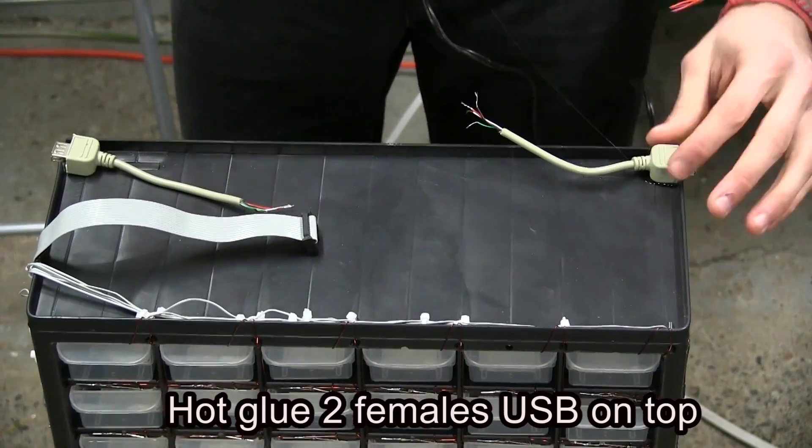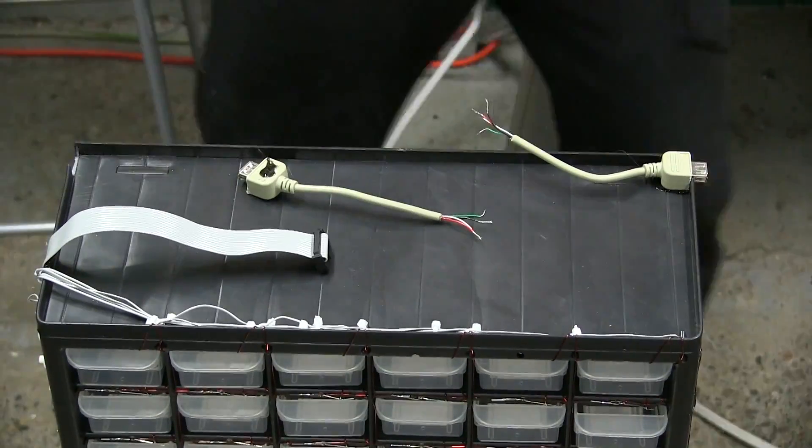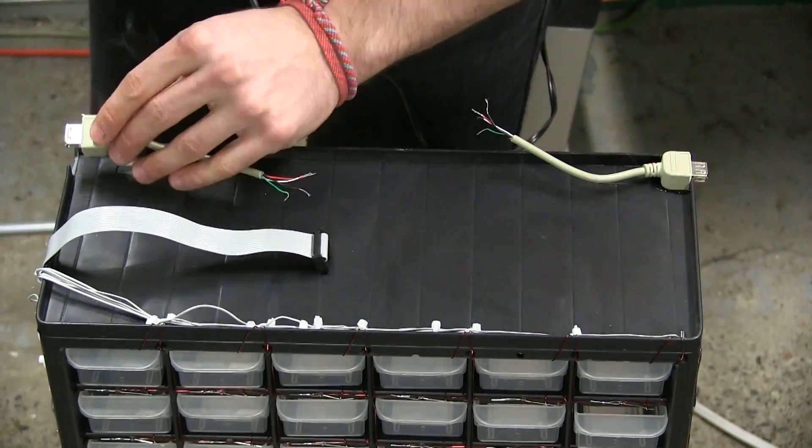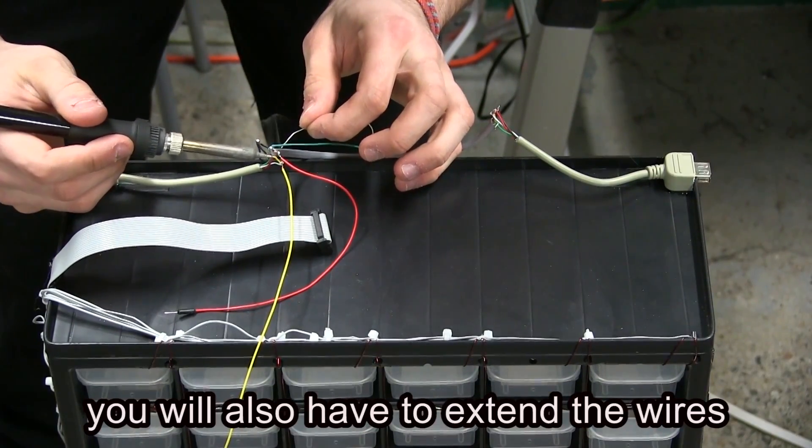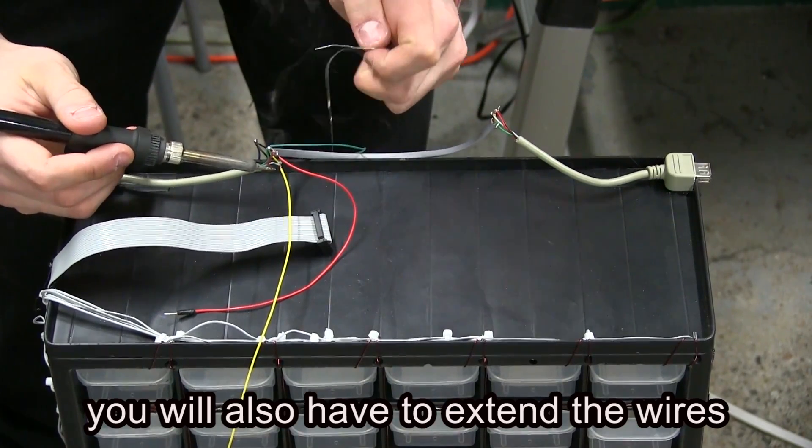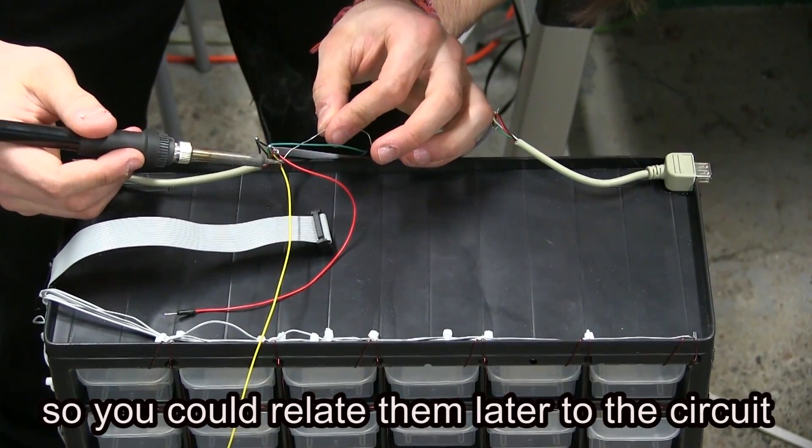Hot glue two female USB on top. Now connect them together with the same color matching. You will also have to extend the wires so you could relay them later to the circuit.